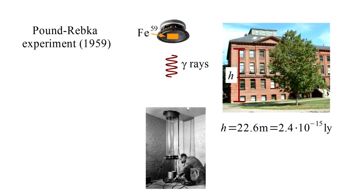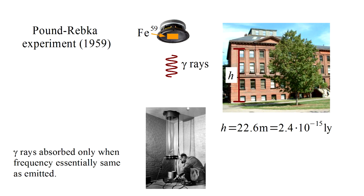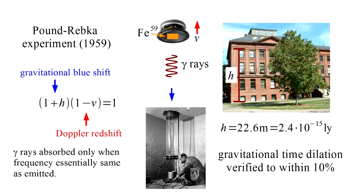In 1959, Pound and Rebka performed an experiment between two floors of a laboratory, 22.6 meters apart. They took a loudspeaker and attached a sample of radioactive iron. This emitted gamma rays, which traveled from the top floor to the ground floor, where they passed through another iron sample. The gamma rays are absorbed by the second sample only when the frequency is essentially the same as the emitted frequency. In this manner, the two iron samples act as very precise clocks. As we've seen, the top floor clock will appear to run faster. Hence, the gamma rays observed at the ground floor will experience a gravitational blue shift to a higher frequency. By causing the loudspeaker to move the upper iron sample away from the ground, a Doppler red shift to a lower frequency could be introduced. When these two frequency shifts precisely cancelled out, the ground sample was observed to strongly absorb the gamma rays. And since the speed of the sample on the loudspeaker could be measured, this allowed an experimental measurement of the gravitational time dilation. The results verified general relativity to within 10%.